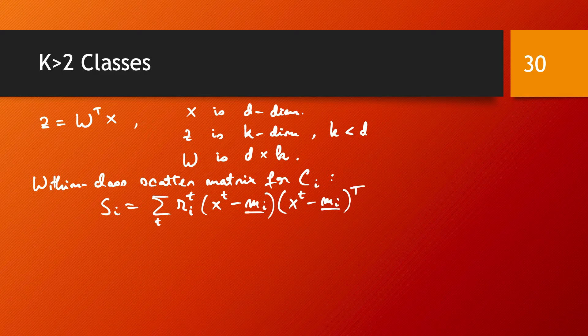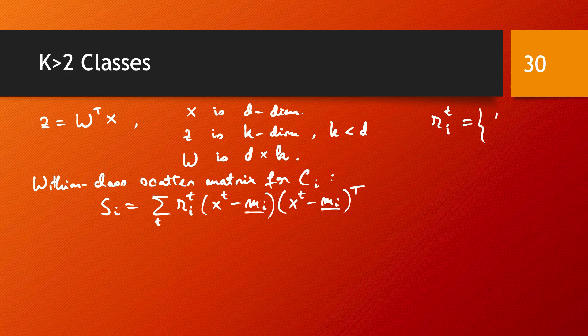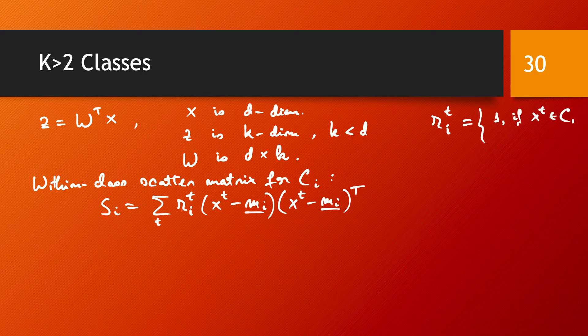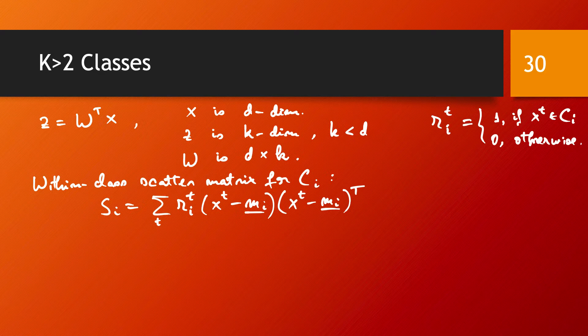And the labels I'm just going to write here. The labels are R_it equals 1 if x_t is in class C_i and it's 0 otherwise. So we have this one hot encoding of our labels just like we had many times before.